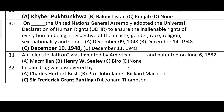Question number thirty-one: the electric flatiron was invented by an American and patented on June 6, 1882. Iska sahi jawab hai Henry W. Seely, jisne electric flatiron ki ijad ki thi — woh American tha. Question number thirty-two: the insulin drug was discovered by Sir Frederick Grant Banting. Option C is correct.